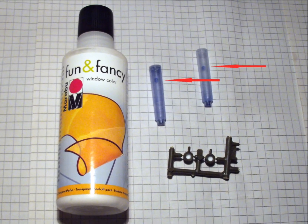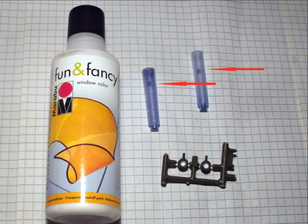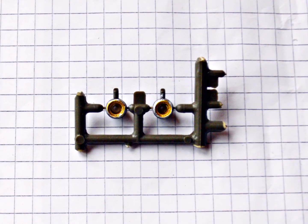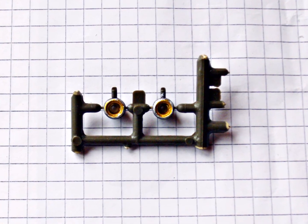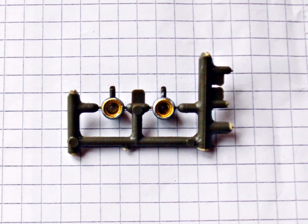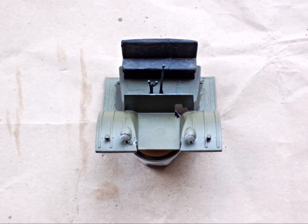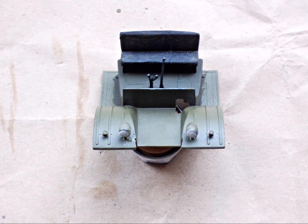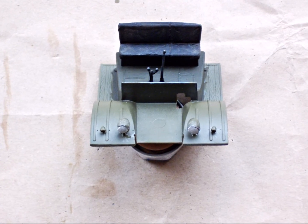The headlights were a little too deep, so I filled up about a third of them using window color. Then they were painted silver and received a coat of clear yellow. I used the balls from ink cartridges to represent the light bulbs. Then I attached the clear parts, masked them, and glued the headlights to the fenders.